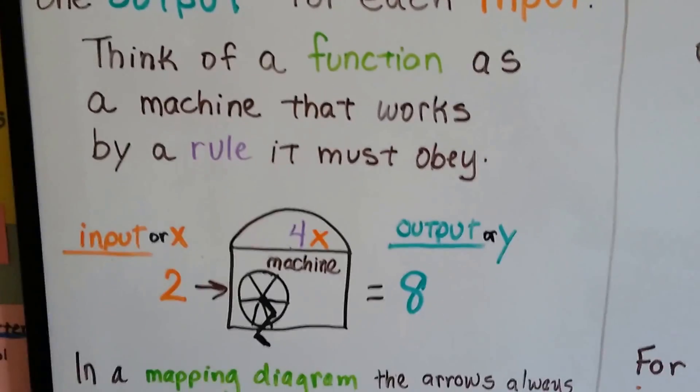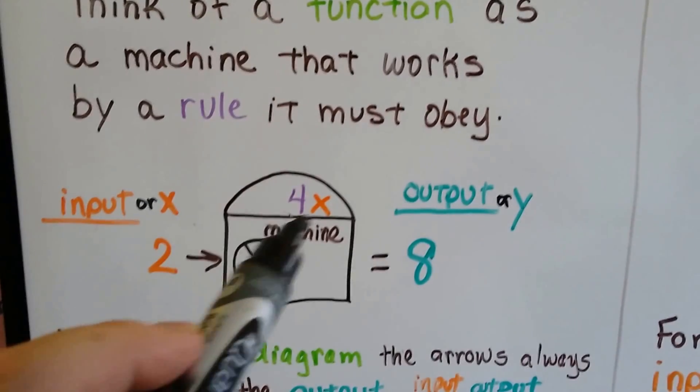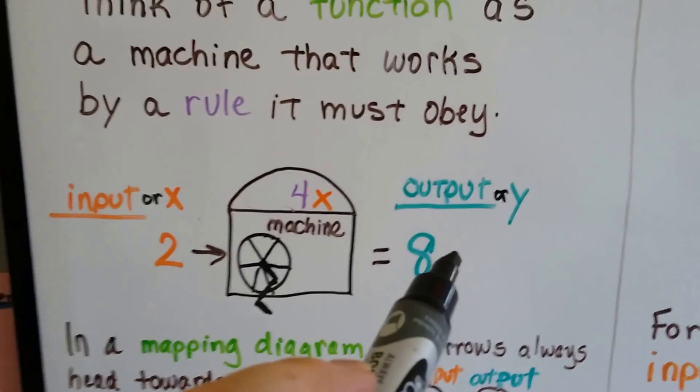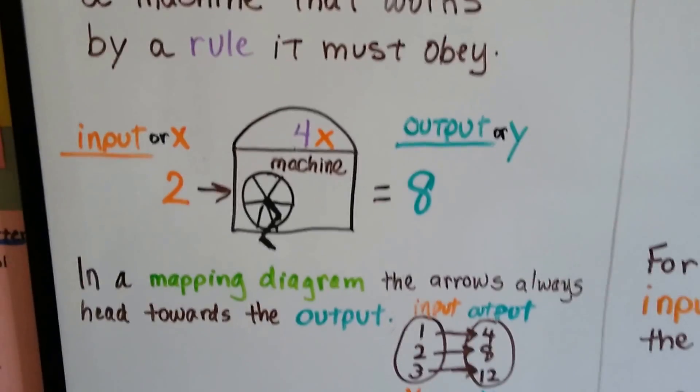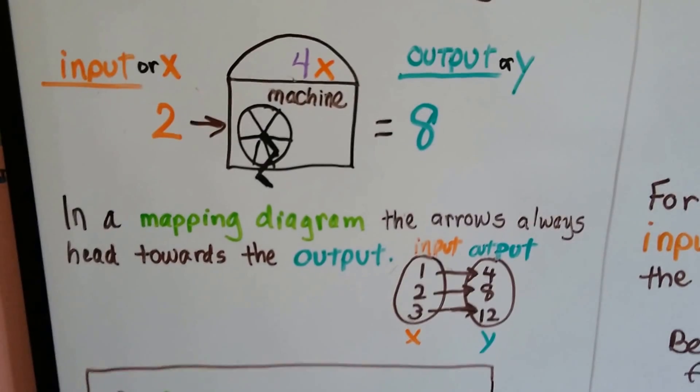If this is our function machine, this is a 4x function machine. And if we put 2 in as x, 2 times 4 is 8. That's going to be our output. See? If we put a 3 in, it'll get multiplied by 4, it'll be a 12. The 12 would be our output.